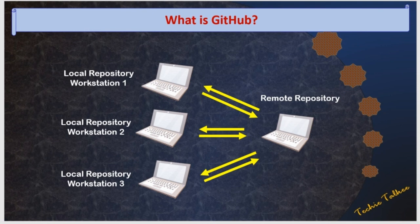Before getting into Git, we need to understand the need for version control of our code. In a project, we all work as a team. Each team member will be working on some functionality or the other. At the end, all these functionalities need to be integrated together. Each team member will have a local copy of the code that needs to be pushed to the server on each day or after some logical closure. Multiple people working on a project with multiple changes to a functionality need to be tracked well to avoid confusion.